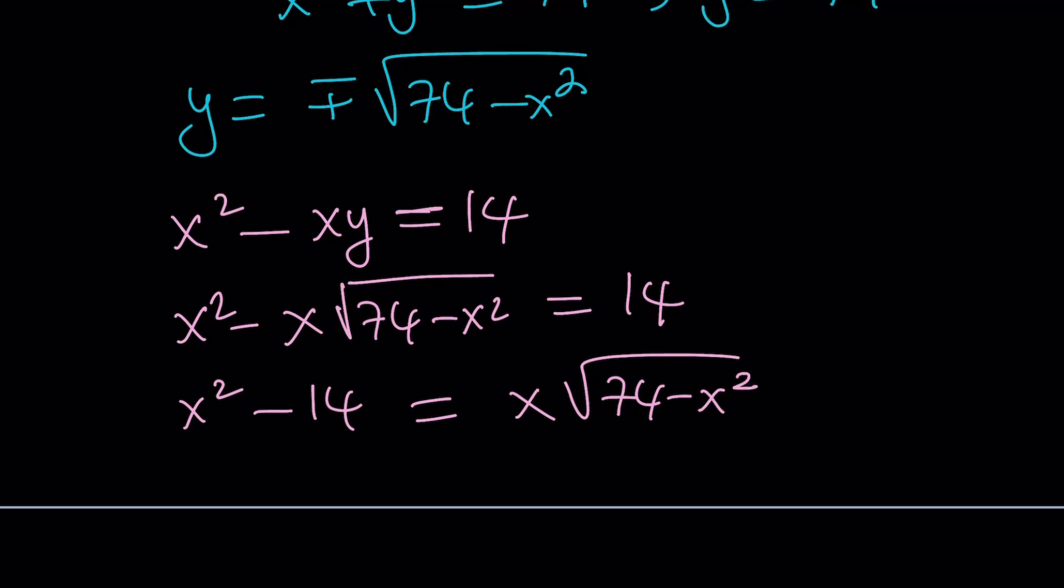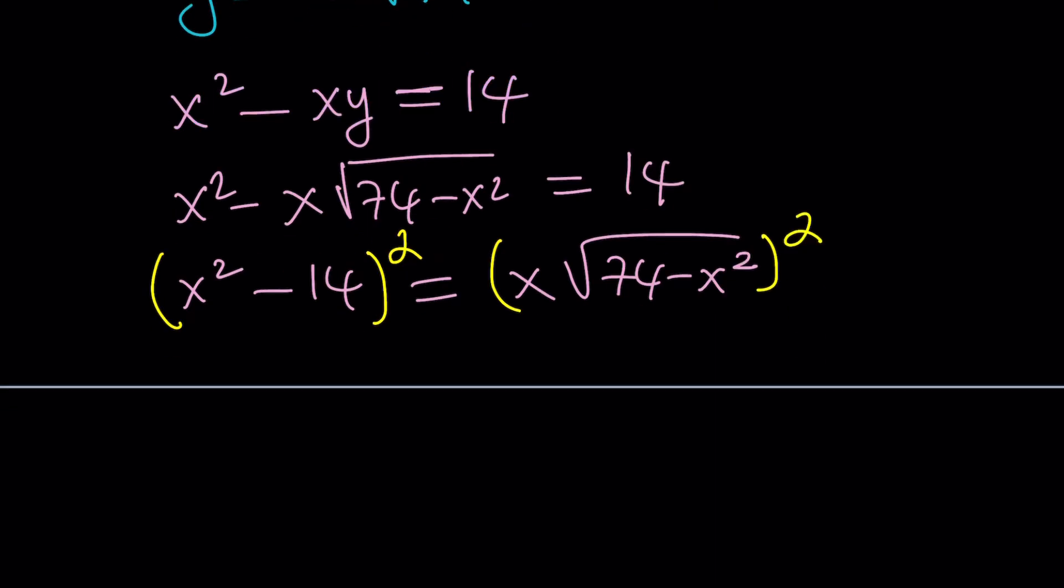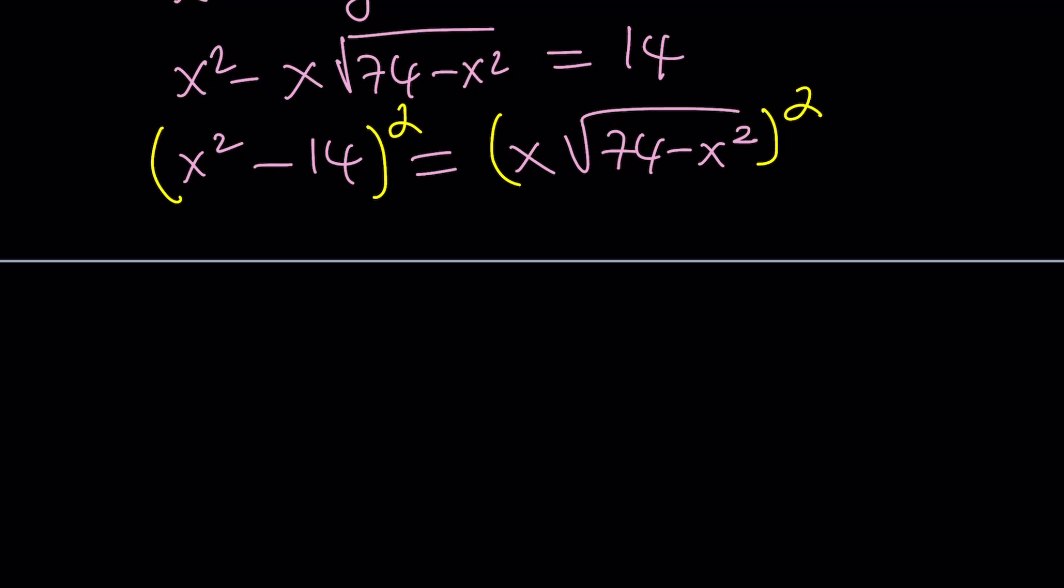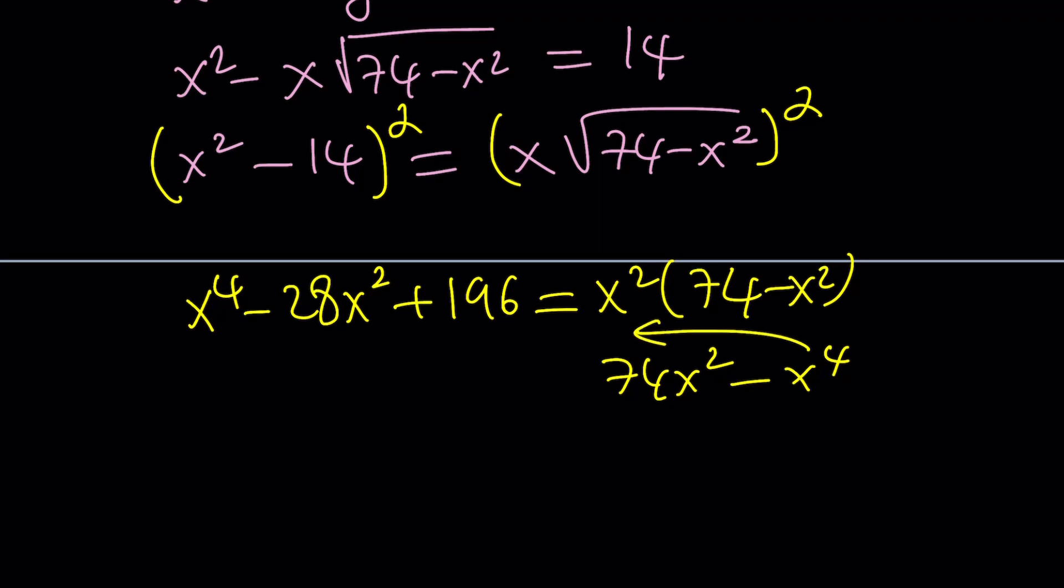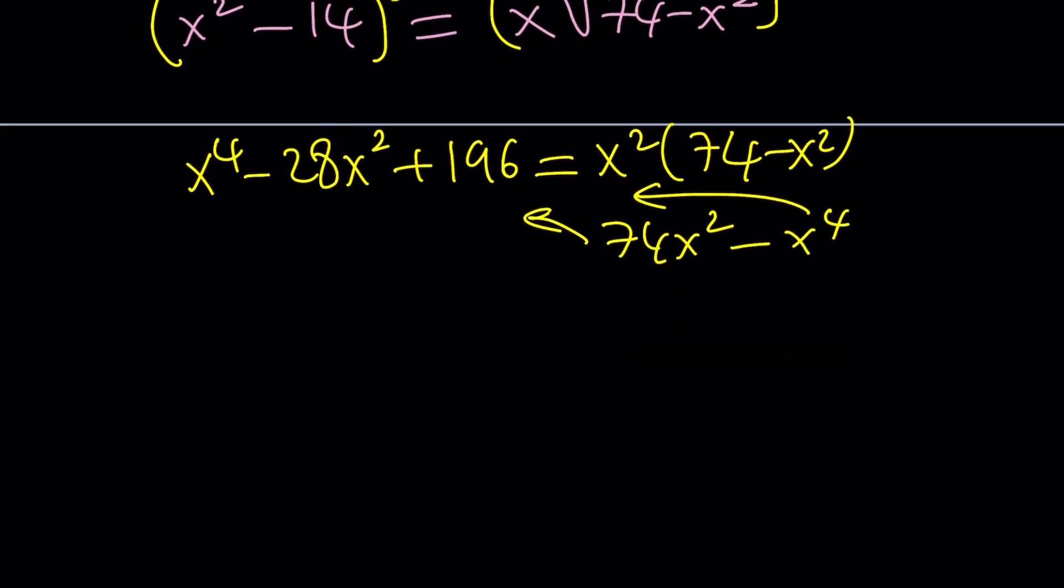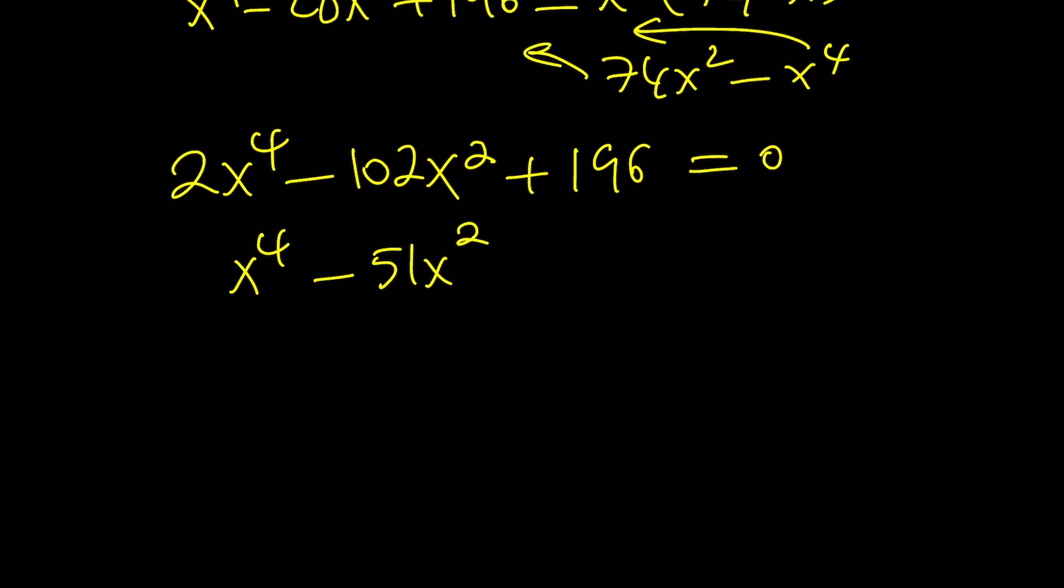That's what you do with radical equations almost all the time. If you square x squared minus 14 by using the formula, you're going to get x to the fourth minus 28x squared plus 196. And on the right-hand side, you're going to get a product x squared times 74 minus x squared, which you could distribute and write as 74x squared minus x to the fourth. Now, if you go ahead and bring the x to the fourth and 74x squared over to the left-hand side and put it together, you're going to get 2x to the fourth minus 102x squared plus 196, which is already there, equals 0. And we can divide everything by 2, which is helpful. x to the fourth minus 51x squared plus 98 equals 0.